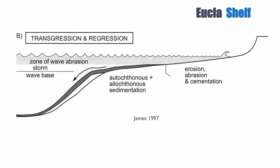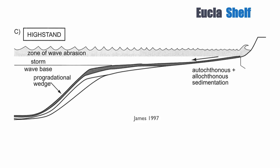During transgression and regression, waves can abrade the sediment and erode where there is high wave energy, but otherwise we can have deposition of both autochthonous and allochthonous sediments on the shelf itself. During high stand, we have a little bit of abrasion where waves exist, but we also have a lot of autochthonous sedimentation on top of the shelf.